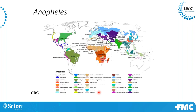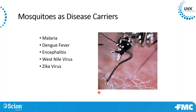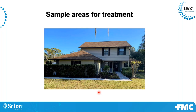There are many different Anopheles species, and the eastern half of the U.S. has a large population of them. Mosquitoes can transmit a wide range of diseases — malaria, dengue, West Nile, Zika, and encephalitis — which is why they're such a significant concern.